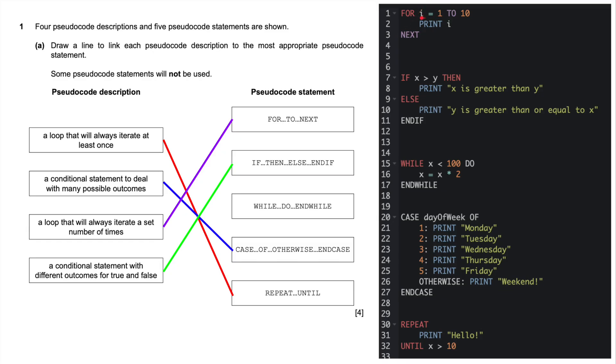And then finally, a conditional statement with different outcomes for true or false. We're going to do if, then, else, end if. It's a conditional statement. If this does this. If x is greater than y, then do this. Print x is greater than y. Else, do this. If, then, a conditional statement.